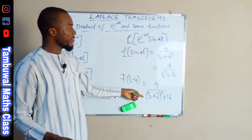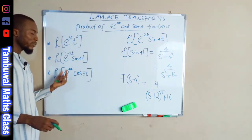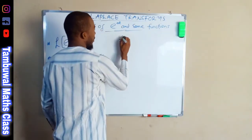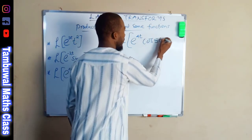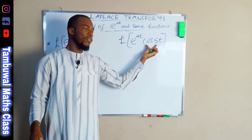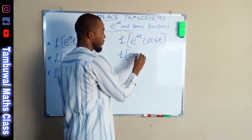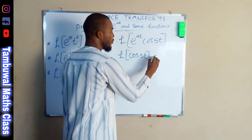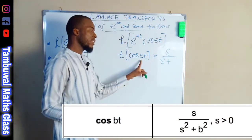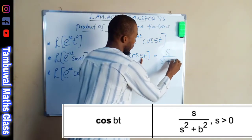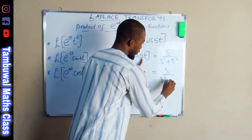Now let us look at the last one: the Laplace transform of e^(4t) cos five t. First we find the Laplace transform of cos five t, which equals s over s squared plus twenty-five.